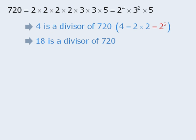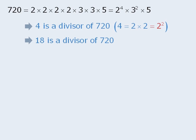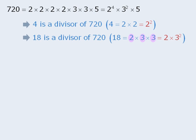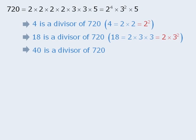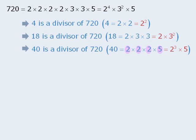Similarly, 18 is a divisor of 720, since 18 equals 2 times 3 times 3, and in the prime factorization of 720 we have 2 times 3 times 3. Finally, 40 is a divisor of 720, since 40 equals 2 times 2 times 2 times 5, and this same product can be found in the prime factorization of 720.